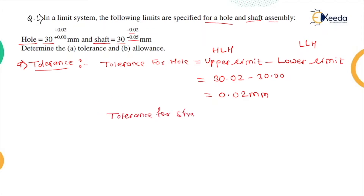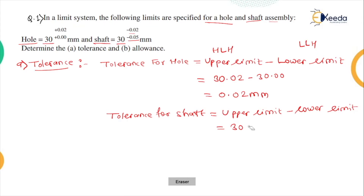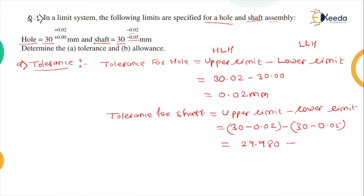Then the tolerance for the shaft — again upper limit minus lower limit. For the shaft, the upper limit is 30 minus 0.02, and the lower limit is 30 minus 0.05. So that is 29.980 minus 29.950, which gives 0.030 mm.